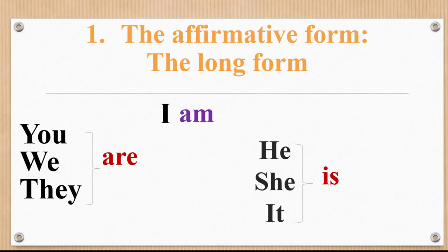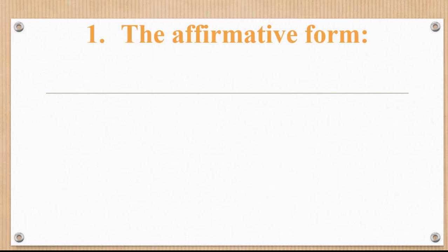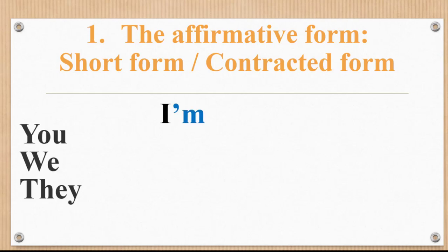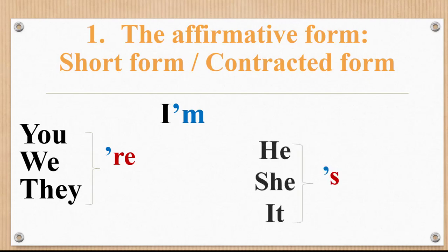He is, she is, it is. The affirmative form, short form or contracted form: I'm, you're, we're, they're, he's, she's, it's.